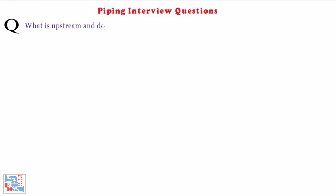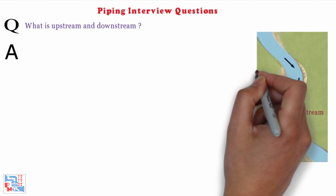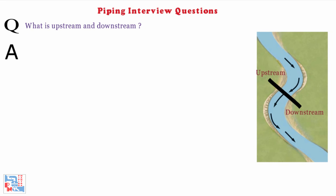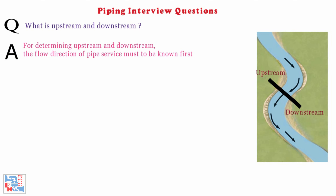Next, what is upstream and downstream? To remember this, consider a river flowing in one direction. If we put a twig or wood piece in the river, the natural direction of flow is the downstream and the opposite direction is the upstream. For determining upstream and downstream, the flow direction of the pipe service must be known first.